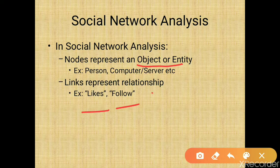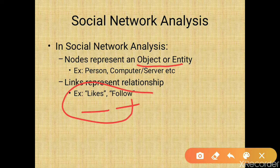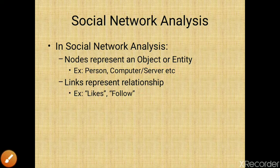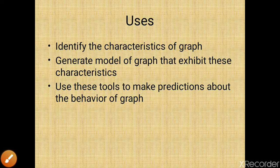In social network analysis we use graph theory concepts. In a graph, nodes represent objects or entities like a person or a computer, and links show the relationship — how one entity is related to another, such as a 'follows' relationship in social networks.